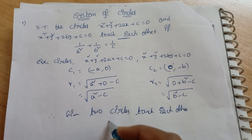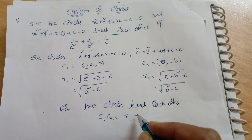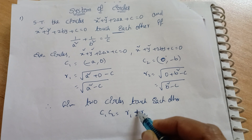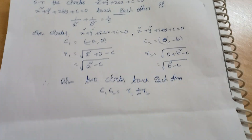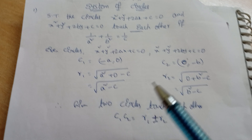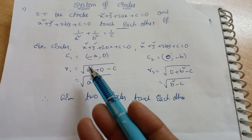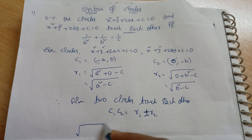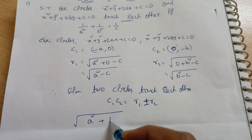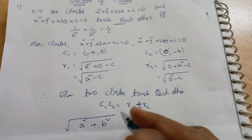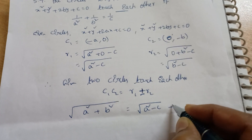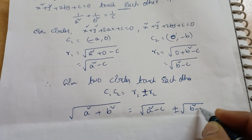Since the two circles touch each other, the condition is C1C2 = r1 ± r2. Using the distance formula, C1C2 = √((−a − 0)² + (0 − (−b))²) = √(a² + b²). So we have √(a² + b²) = √(a² − c) ± √(b² − c).